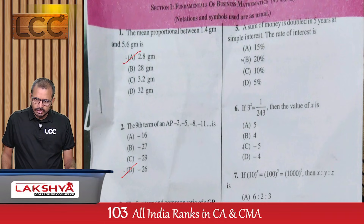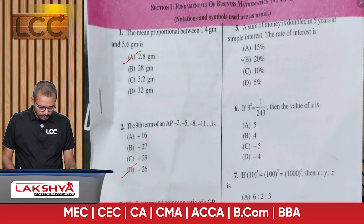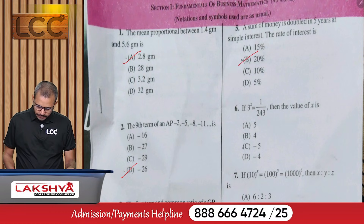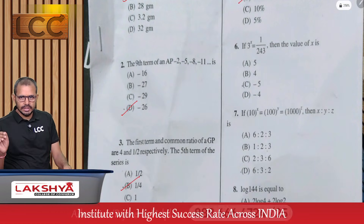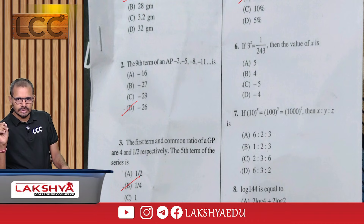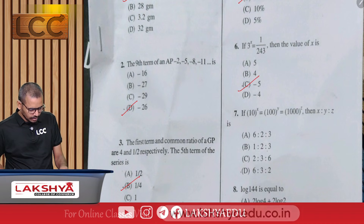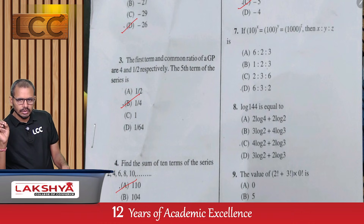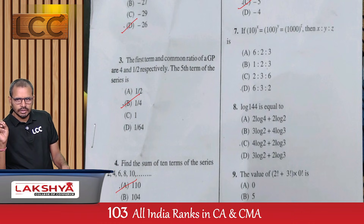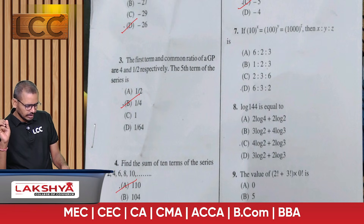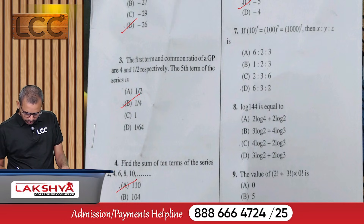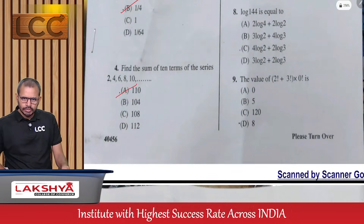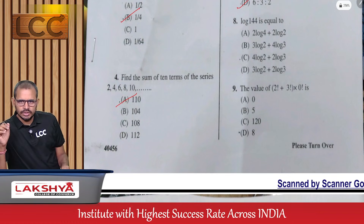Question 5: A sum of money doubles in five years at simple interest, find the rate of interest — option B. Question 6: 3^x = 1/243, find the value of x (which equals -5) — option C. Question 7: 10^x = 100^y = 1000^z, find the ratio x:y:z — option D.